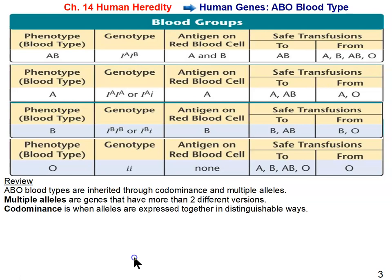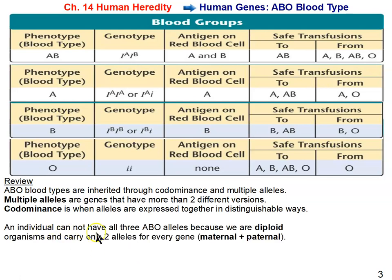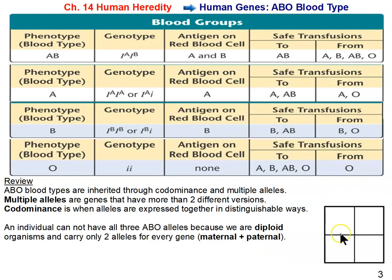Even though there are three alleles, an individual can only have two alleles because we are diploid organisms — we get one set of chromosomes from our mother and one from our father. So it's impossible for an individual to have all three alleles, but all three exist in the human gene pool. Let's complete a Punnett square crossing a person with type A blood who is heterozygous A — carrying the recessive O allele — with a person who is heterozygous B.